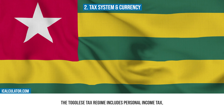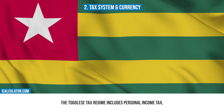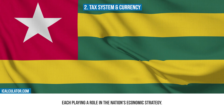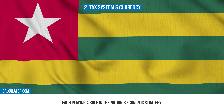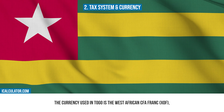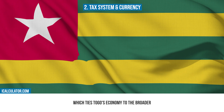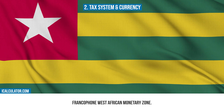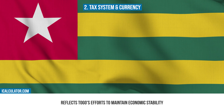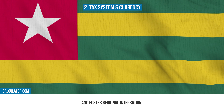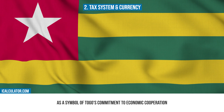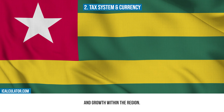The Togolese tax regime includes personal income tax, corporate tax, and value-added tax (VAT), each playing a role in the nation's economic strategy. The currency used in Togo is the West African CFA franc, which ties Togo's economy to the broader francophone West African monetary zone. This currency choice reflects Togo's efforts to maintain economic stability and foster regional integration. The CFA franc serves as a symbol of Togo's commitment to economic cooperation and growth within the region.